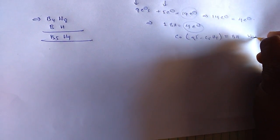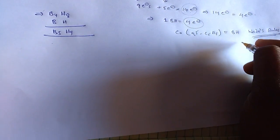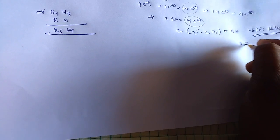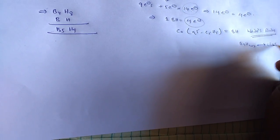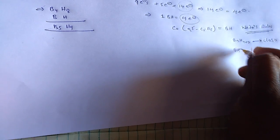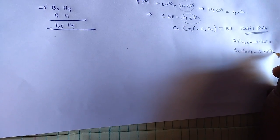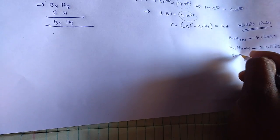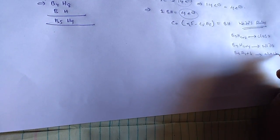We know that BnHn+2 is closo, and BnHn+4 is nido, and BnHn+6 is arachno.